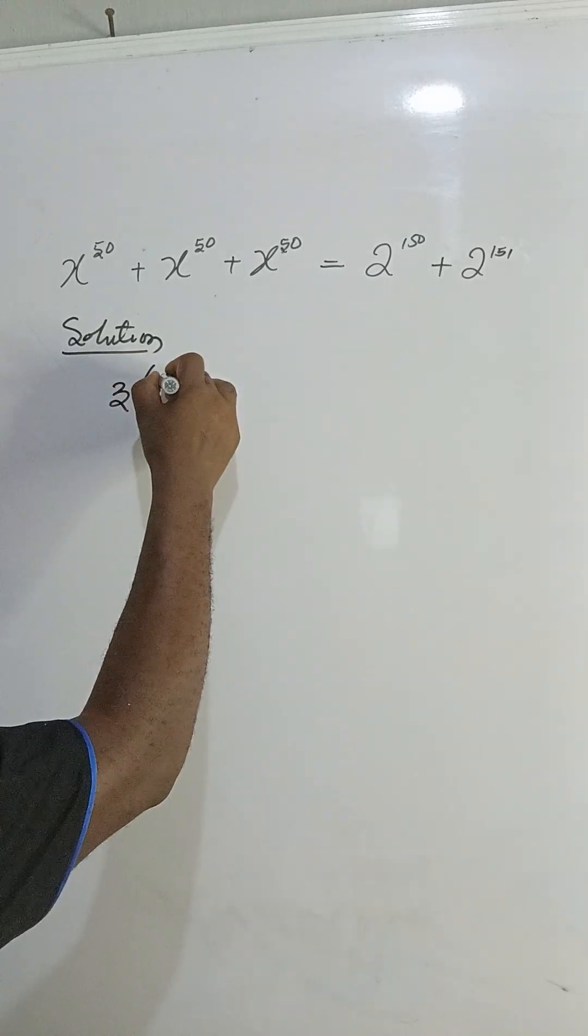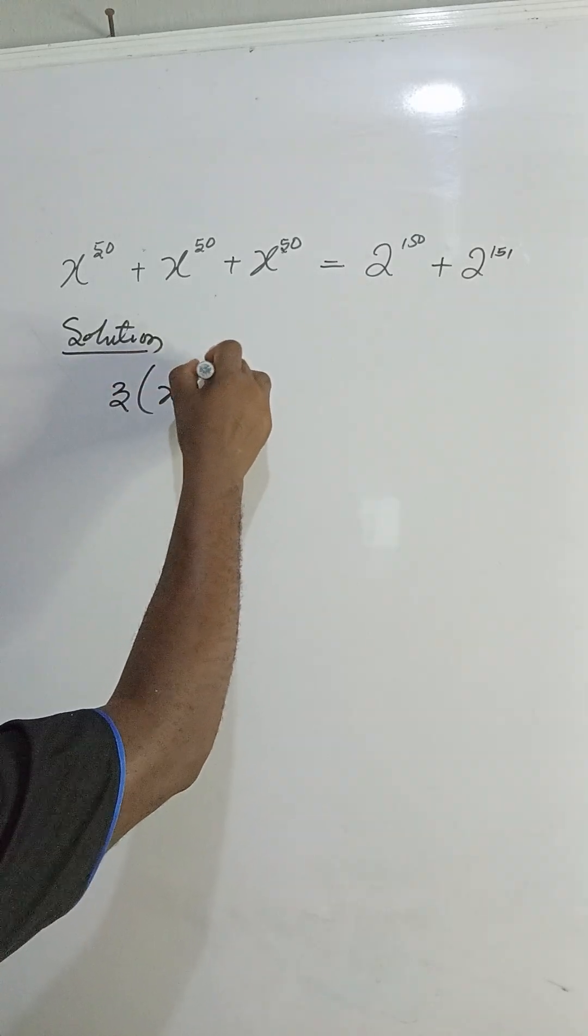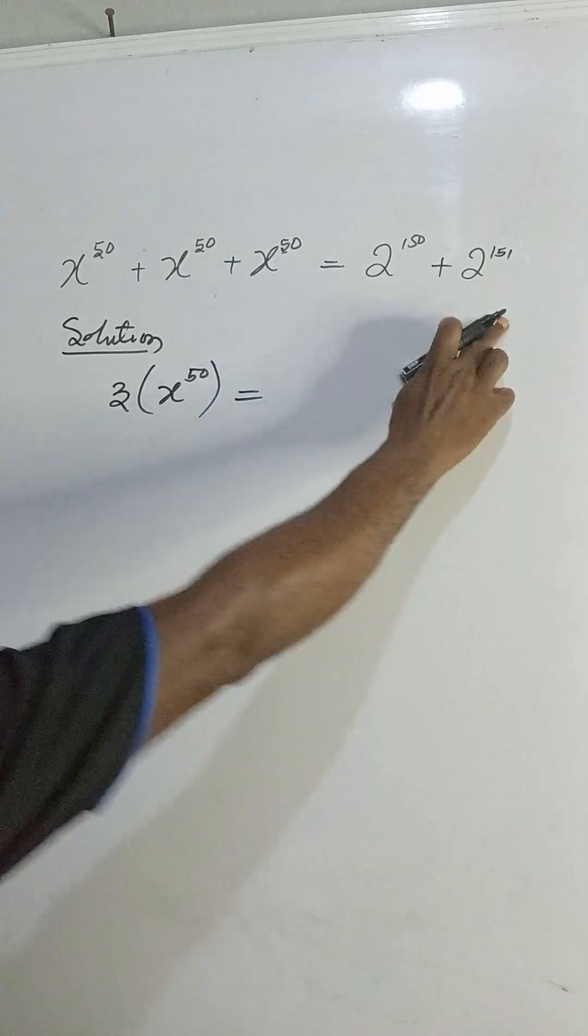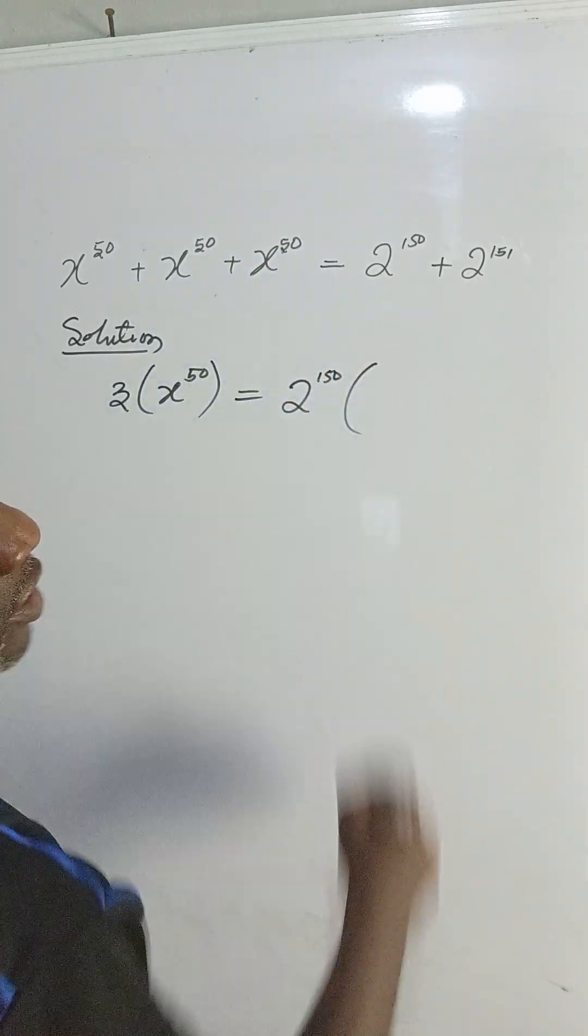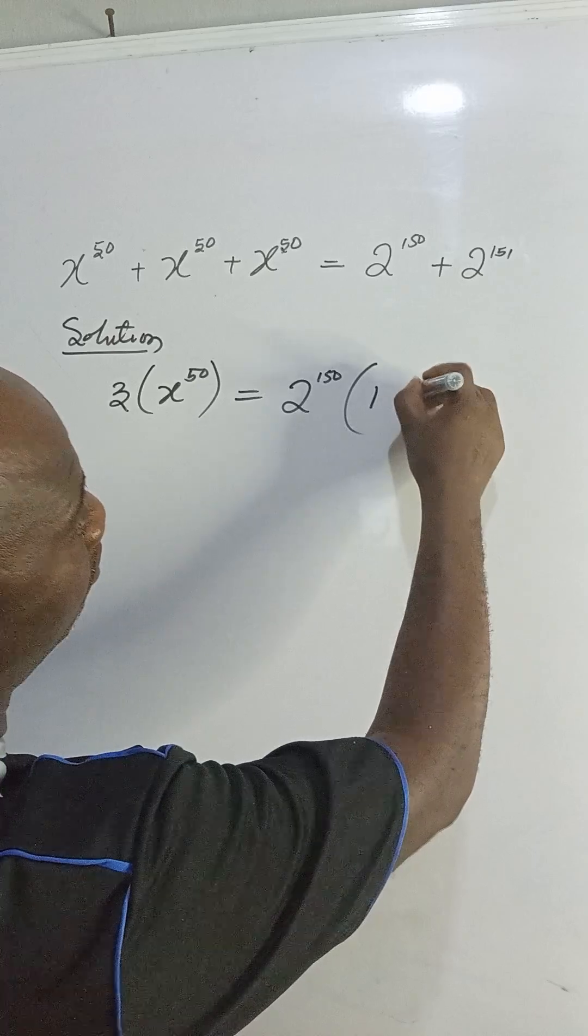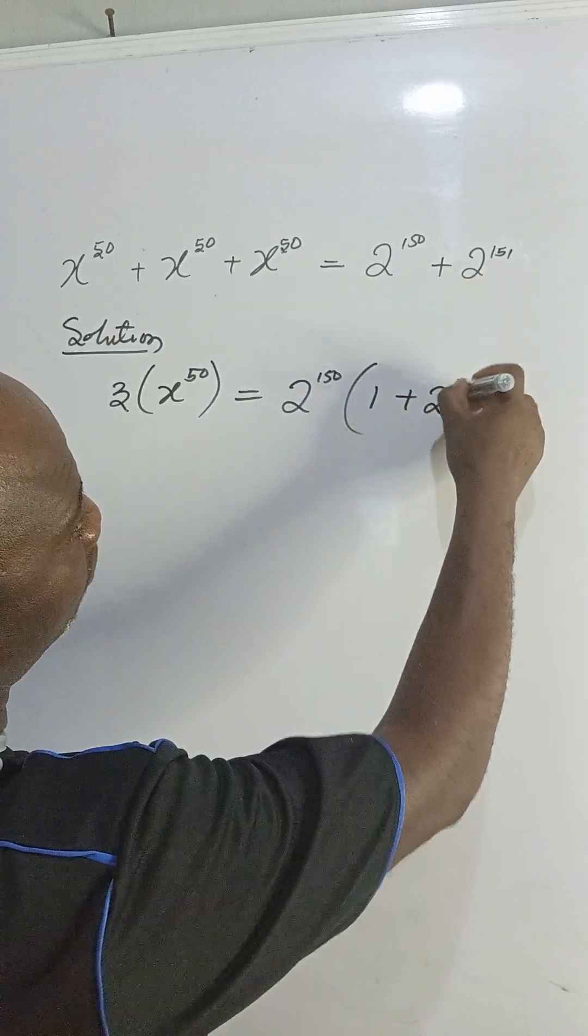So that would be 3 times x to the power of 50 equal to... If you look here, you have 2 to the power of 150 is actually a common factor. So you have 1 plus, then here will be 2 to the power of 1.